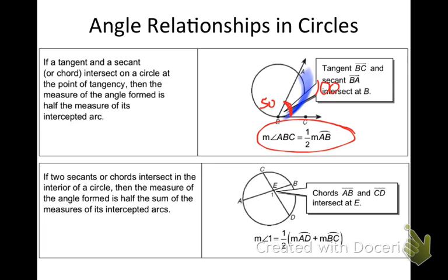If two secants or chords intersect in the interior of a circle, then the measure of the angle formed is half the sum of the measures of its intercepted arcs. So what that means here is A, C, and B, D are the arcs to find the angles on the inside. First of all, those red angles are what type of angles? Vertical angles. Vertical angles are always congruent. The vertical angles would be half of the arcs added together.